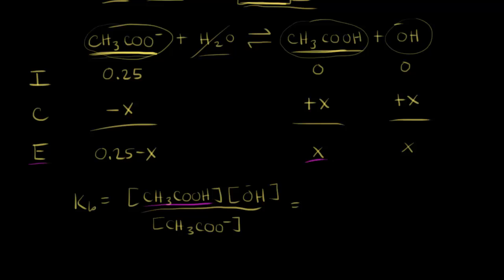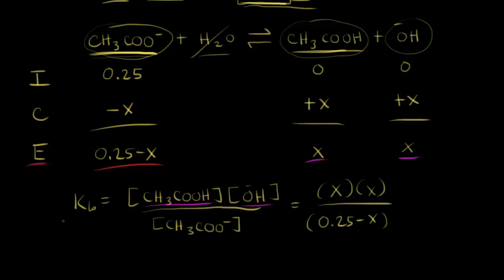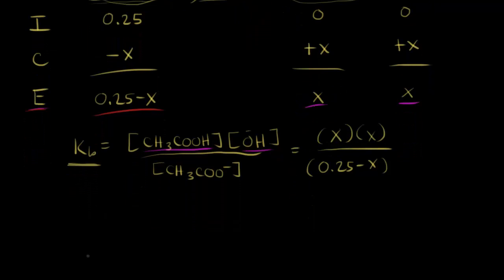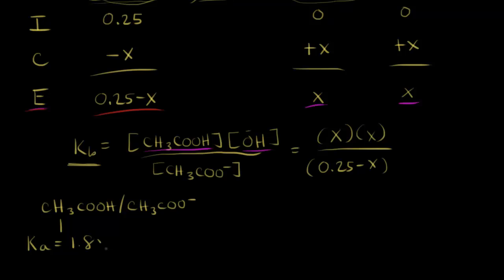At equilibrium, the concentration of acetic acid is X, so we put X in. For hydroxide, it's also X. For the concentration of acetate at equilibrium, it's 0.25 minus X. Next, we need to find the Kb value for this reaction. You won't find it in most tables, but you can find the Ka for acetic acid. Acetic acid and acetate are a conjugate acid-base pair, and the Ka value for acetic acid is 1.8 times 10 to the negative 5.